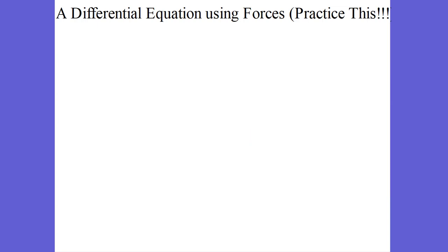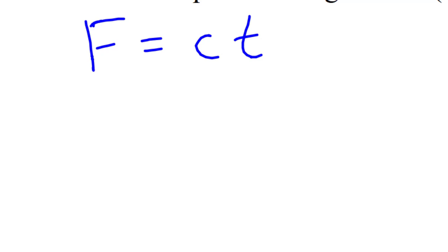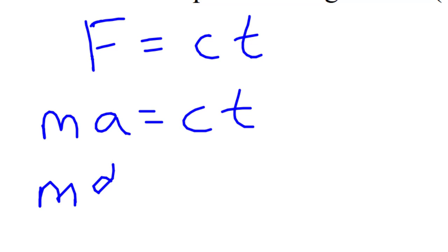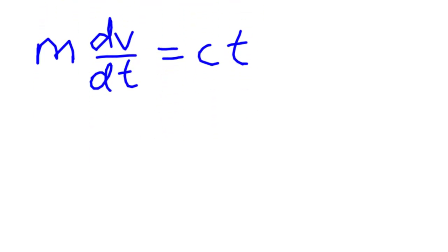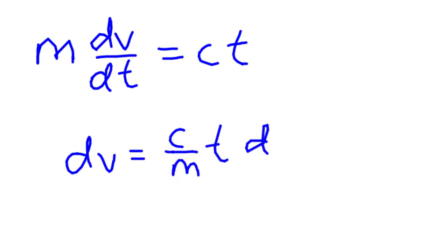Another thing we want to practice is a differential equation using forces. We have a force in the x direction equals some constant times time, which means our force is varying according to time. If the force is varying according to time, we're going to want to use our calculus and differential equations. Force equals mass times acceleration. Acceleration is the differential of velocity with respect to time, equals ct. So we have a differential: dv equals c over m times dt.